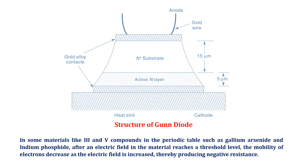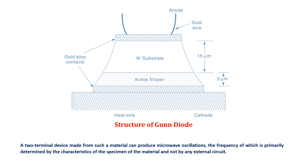In some materials like group III-V compounds in the periodic table, such as gallium arsenide and indium phosphide, after an electric field in the material reaches a threshold level, the mobility of electrons decreases. The electric field is increased thereby producing negative resistance. A two-terminal device made from such a material can produce microwave oscillations.